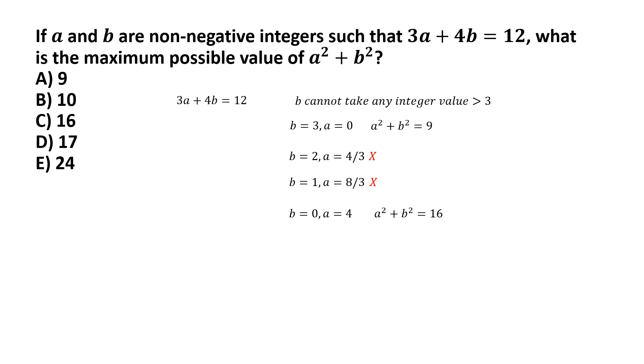So, the solution is pretty easy. The maximum possible value of a square plus b square will be 16, which is option C.